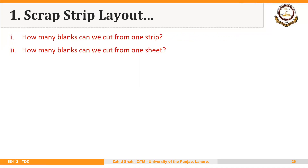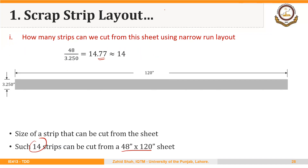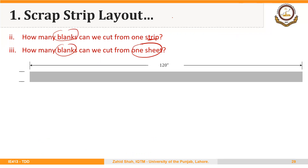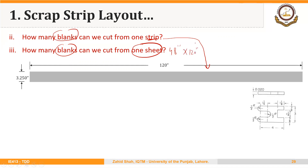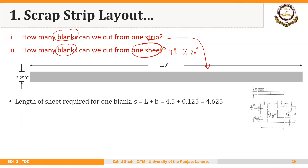The next question is: how many blanks can we cut from one strip? The strip size is 3.250 × 120 inches. The length of sheet required for one blank is L + B. In this case, L = 4 inches (the length of the blank) plus B = 0.125 inches (the distance between blanks, equal to A). So in both examples, A and B are taken to be equal at 0.125 inches, giving L + B = 4.125 inches... wait, that equals 4.625 inches.